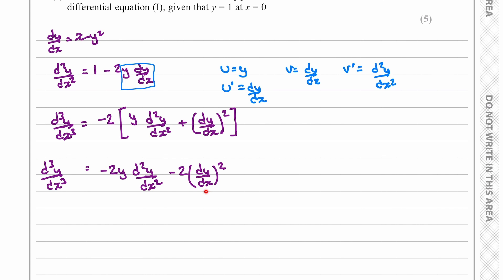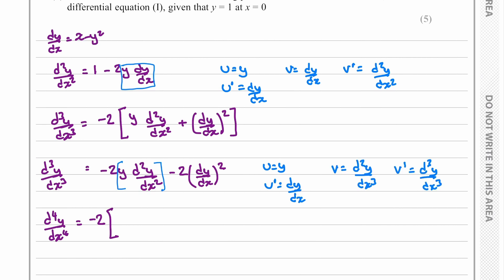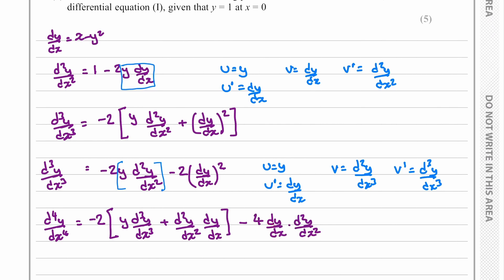For the fourth derivative, we have the negative 2 term, and again we use the product rule to differentiate with respect to x, letting u equal y and differentiating to get d³y/dx³. Substituting into u dv + v du, and then differentiating the (dy/dx)² term using the chain rule — bringing the 2 down gives 4 times dy/dx times d²y/dx².